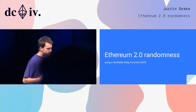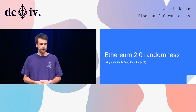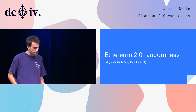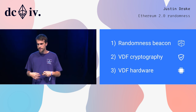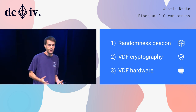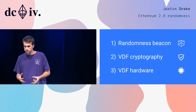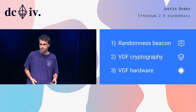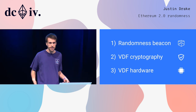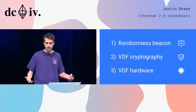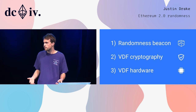Ethereum 2.0 randomness using a verifiable delay function. I'm going to speak about how to build a randomness beacon using a new primitive called a VDF, then explain how to build the VDF, the cryptography that goes behind it, and the supporting hardware.